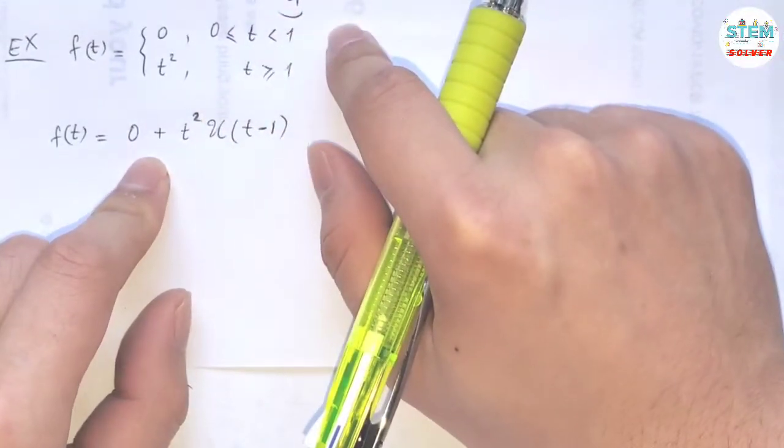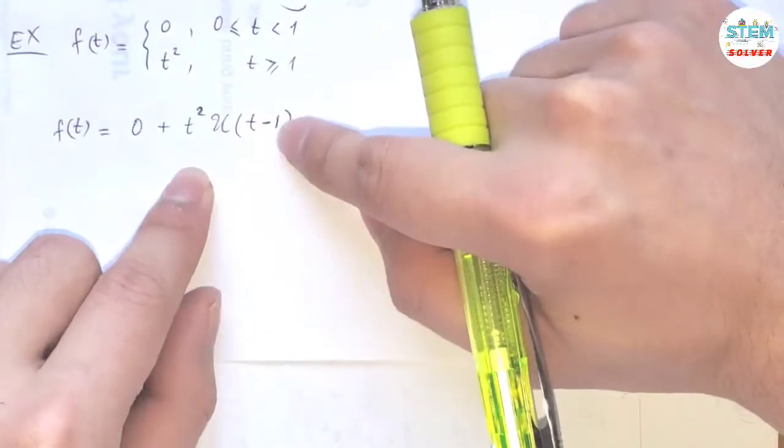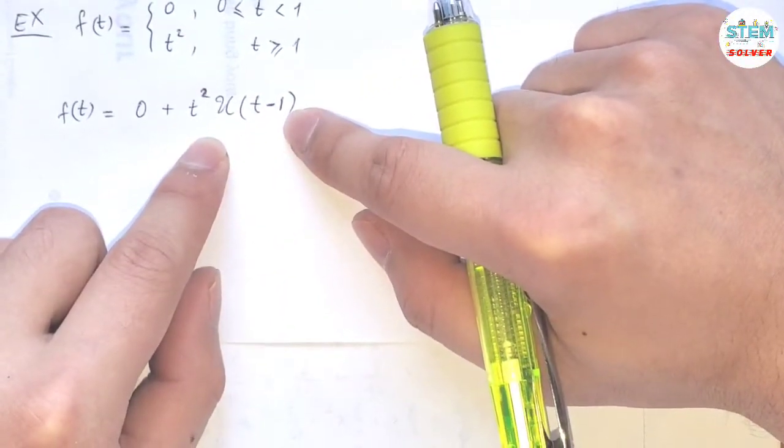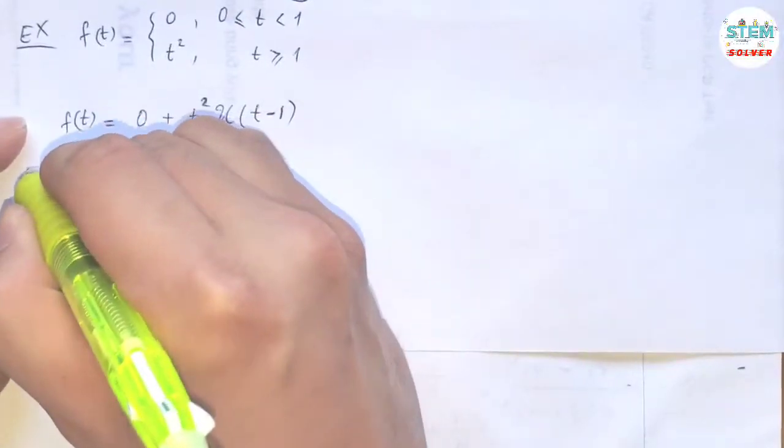From zero to one this is off, so it's just zero. When t hits one, this is turned on and u(t-1) is one, so you have t squared. Zero plus t squared is just t squared. Now find the Laplace transform of this.